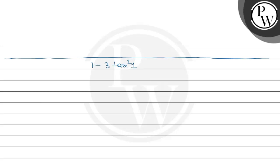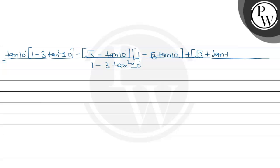Taking common denominator (1 - √3·tan10°) · (1 + √3·tan10°) = 1 - 3tan²(10°). The numerator becomes: tan(10°)·(1 - 3tan²10°) - (√3 - tan10°), plus in the next bracket: (1 - √3·tan10°) + (√3 + tan10°)·(1 + √3·tan10°).